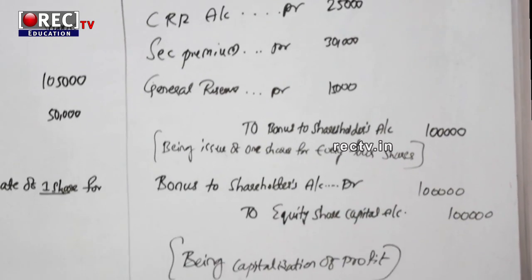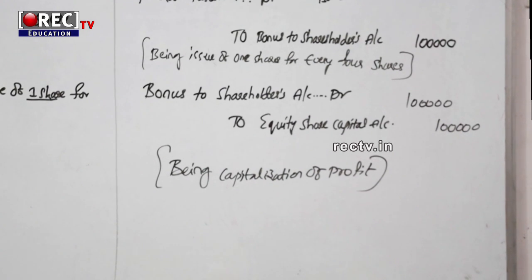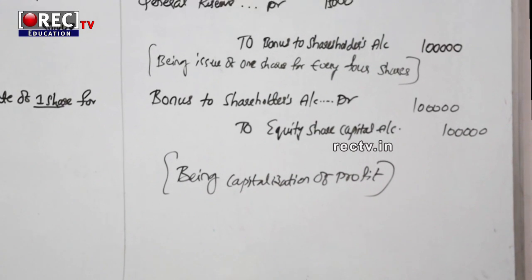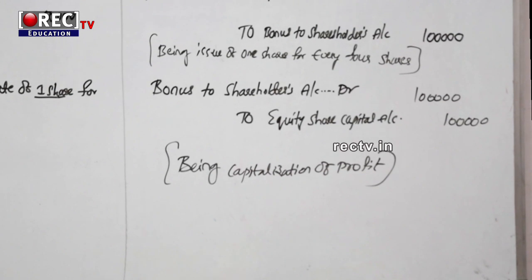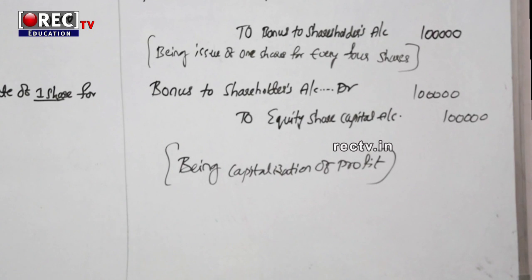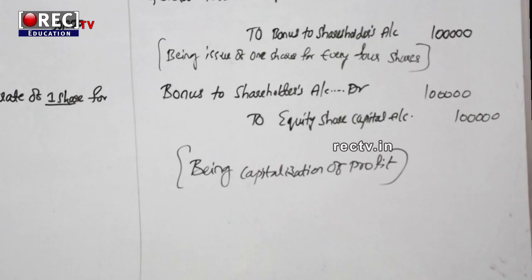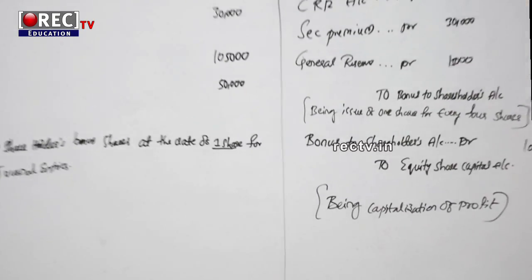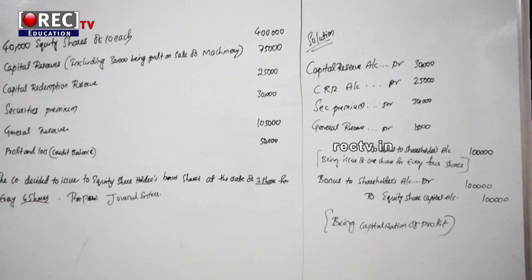The next entry: bonus to shareholders account is debited ₹1,00,000. After transferring to bonus to shareholders account, you then transfer this amount to equity share capital account — ₹1,00,000, being capitalization of profit. So with this problem, we have a clear idea about the accounting treatment for bonus issue, both the concept and with an example. In the next video, we are going to discuss about internal reconstruction. Thank you.